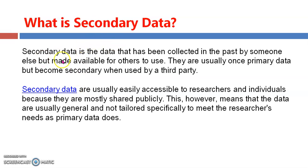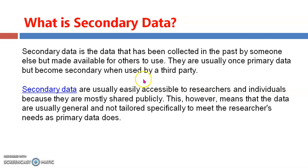Secondary data is data that has been collected in the past by someone else but made available for others to use. If somebody has already collected data and it is now available for other people to use or analyze, that is secondary data. They are usually once primary data but become secondary data when used by a third party — when that data has been collected, recorded, and made available to others.